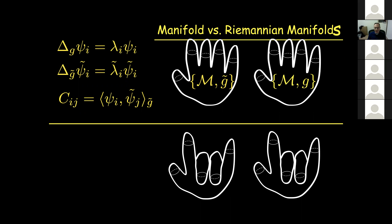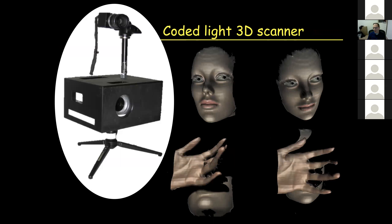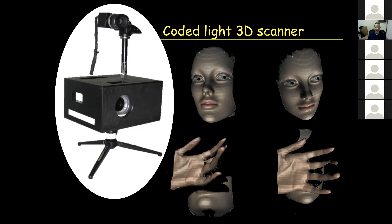How do I capture a geometric structure and feed it into a computer? When I came to the Technion, I got a grant that could fund three PhD students or buy a 3D capturing system. I hired three PhD students and told one to build a stereo-based system — essentially two eyes — where the computer solves the correspondence problem and reconstructs the geometry of objects it looks at.